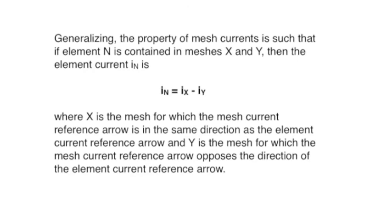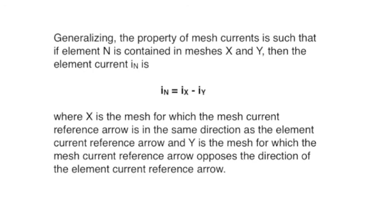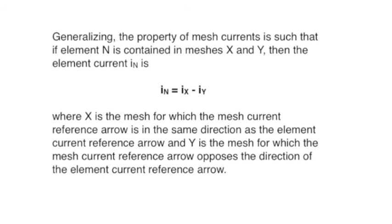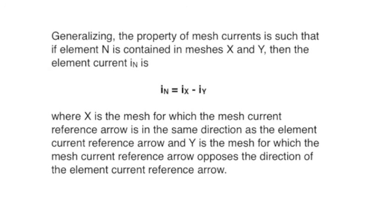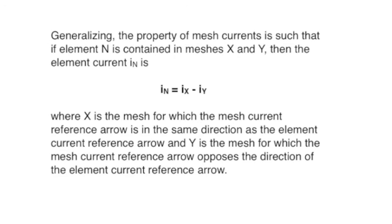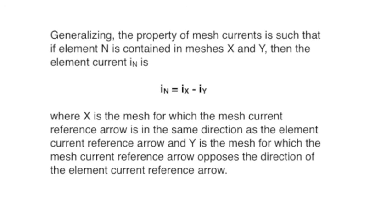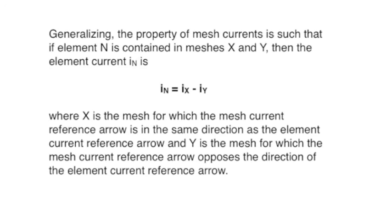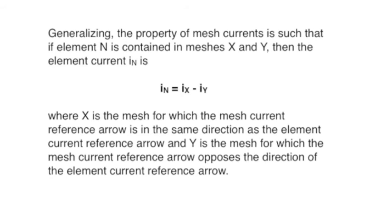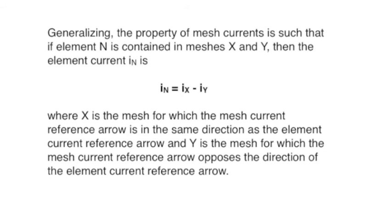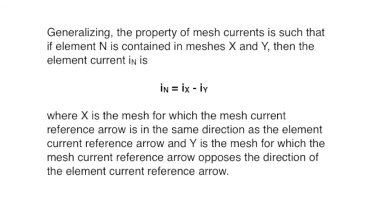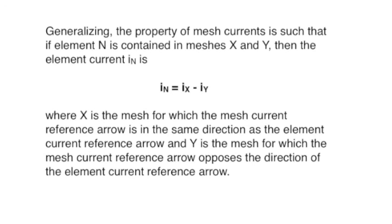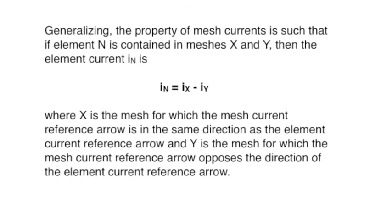These concepts can be wrapped up in one nice equation. Generalizing, if element N is contained in meshes X and Y, then the element current is I sub N equals IX minus IY, where X is that mesh for which the mesh current reference arrow is in the same direction as the element current reference arrow, and Y is the opposite. If the element's only in one mesh, then I sub N equals IX or minus IY, depending on the direction.